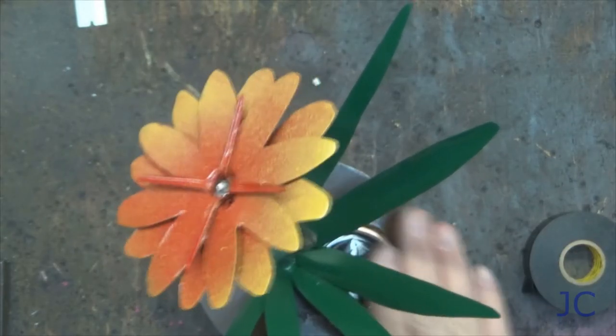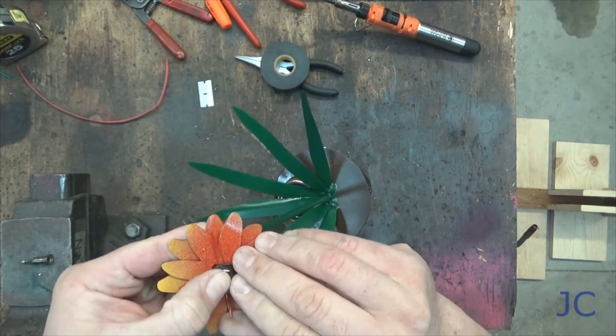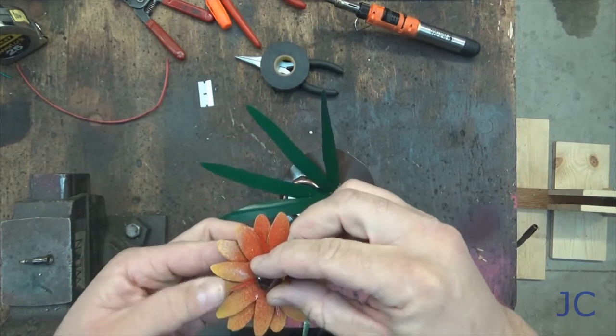The last thing we're going to do is take one of these glass beads and set it into the four prongs of the stem that we built earlier. This works as a nice diffuser for the LED.